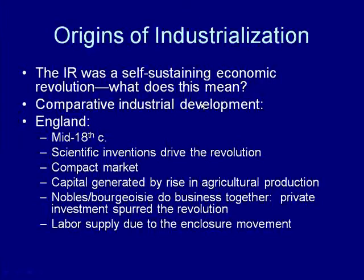England also had a compact market — it's a small country, so there's not a lot of territory to cover between factory and consumer. In the late 18th century, agricultural production grew by leaps and bounds in England, largely due to mechanized farming techniques. This generated a lot of extra capital that well-to-do farmers could invest in factories — the money needed to build factories actually came from increased agricultural production in the late 18th century.